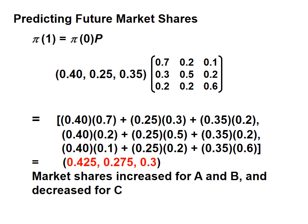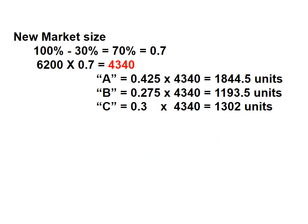The new market share will be 0.425 for A, 0.275 for B, and 0.30 for C. Comparing these with the previous market shares, the market share increases for A and B and decreases for C. The new market size decreases by 30%, so it will be multiplied by 0.7.